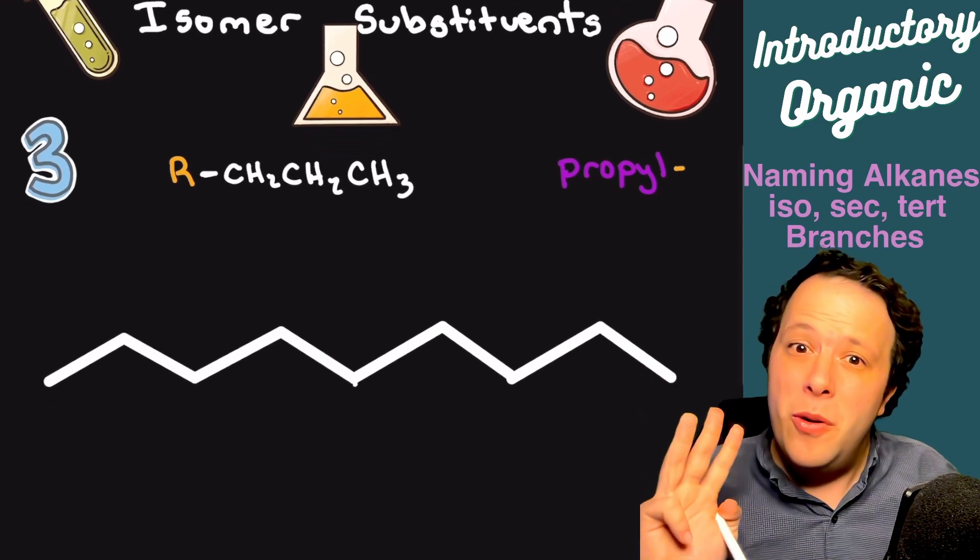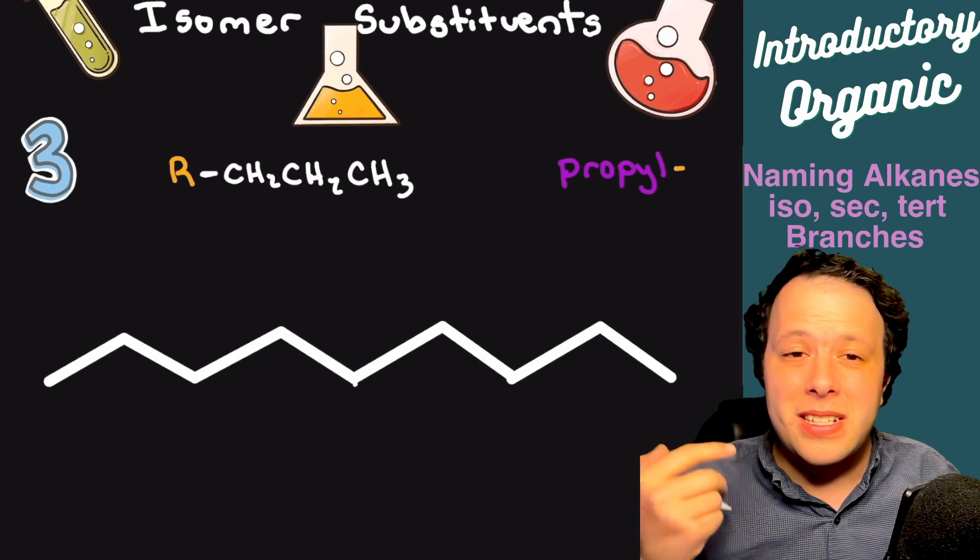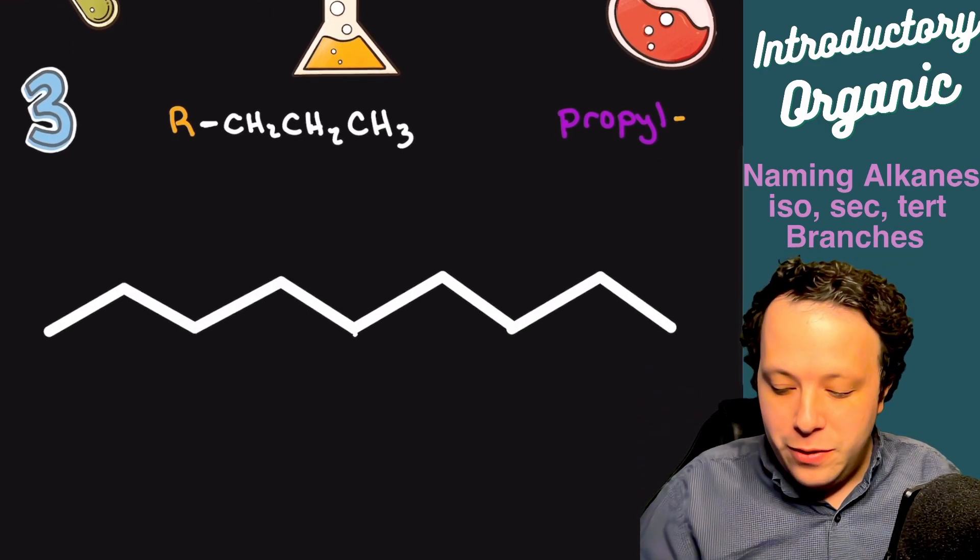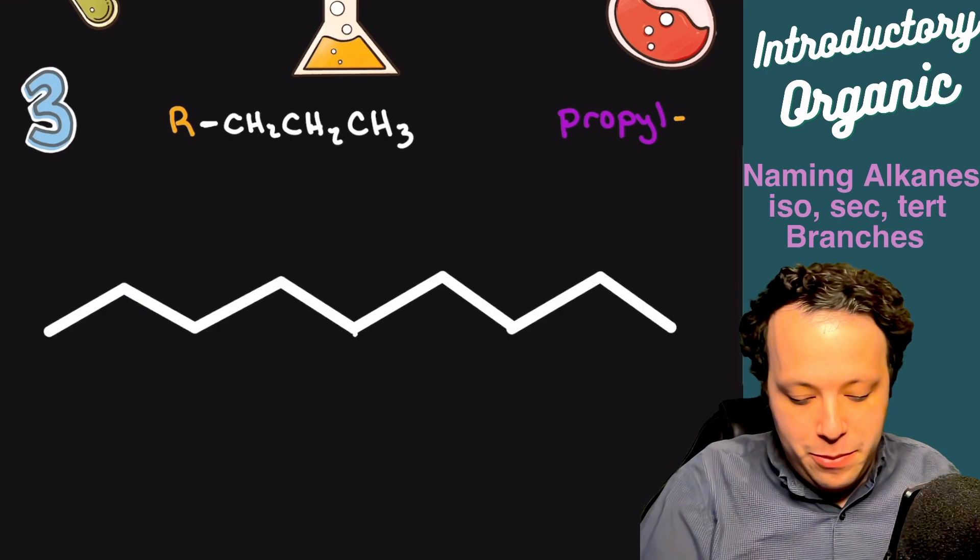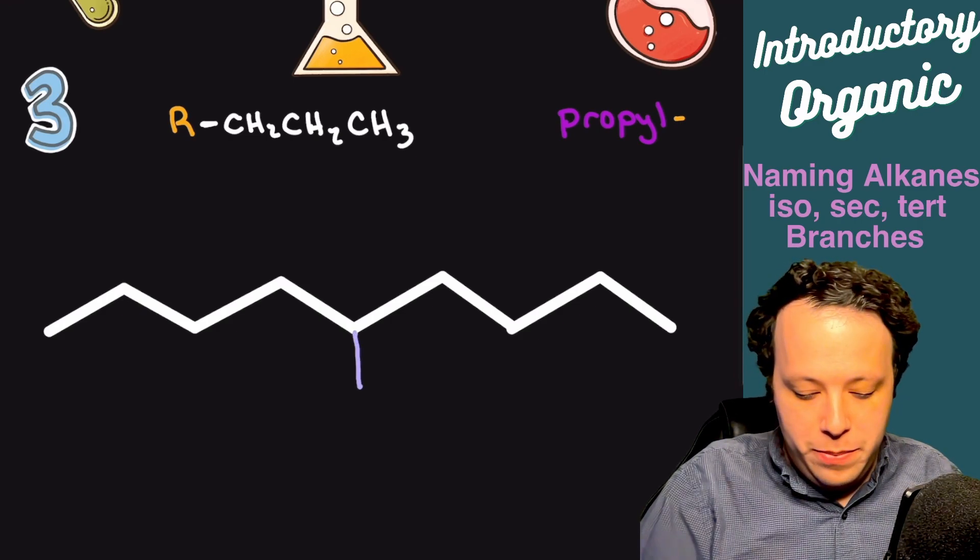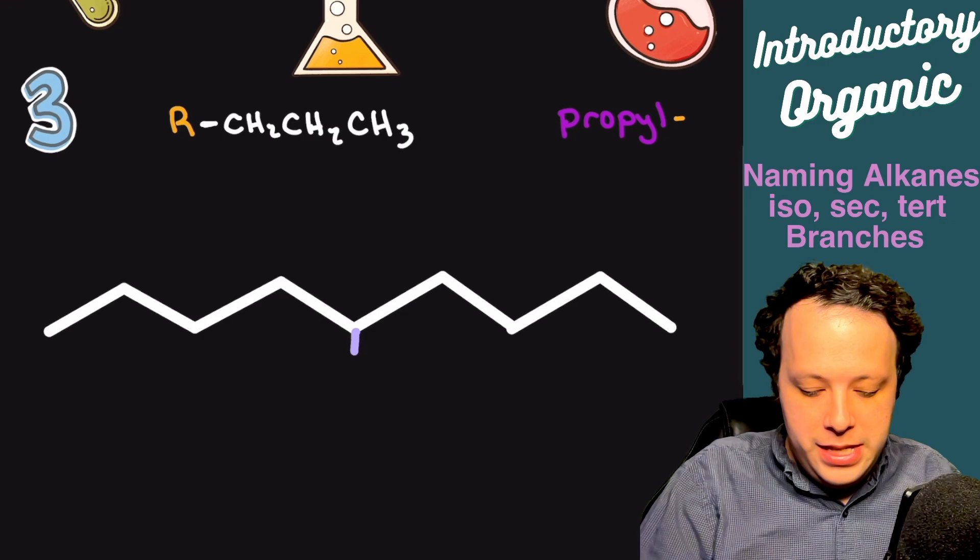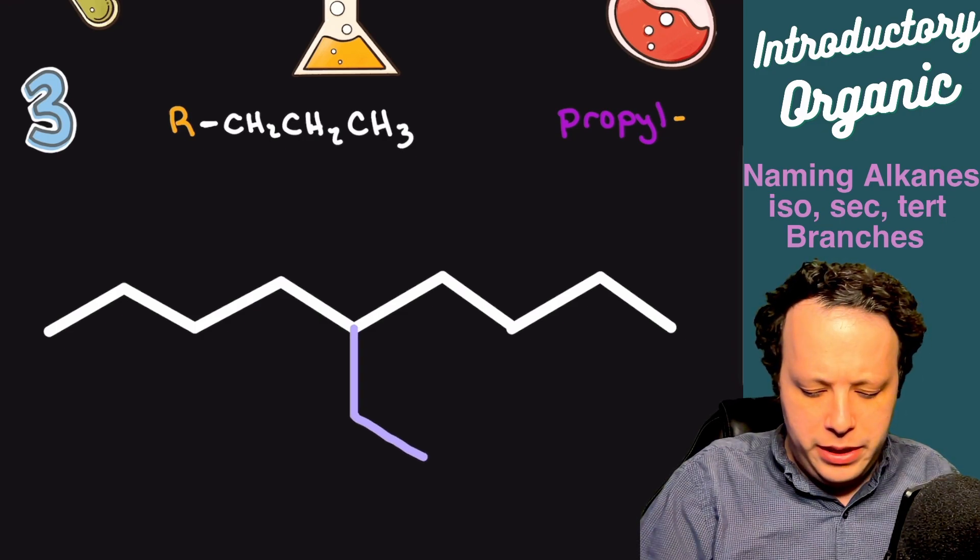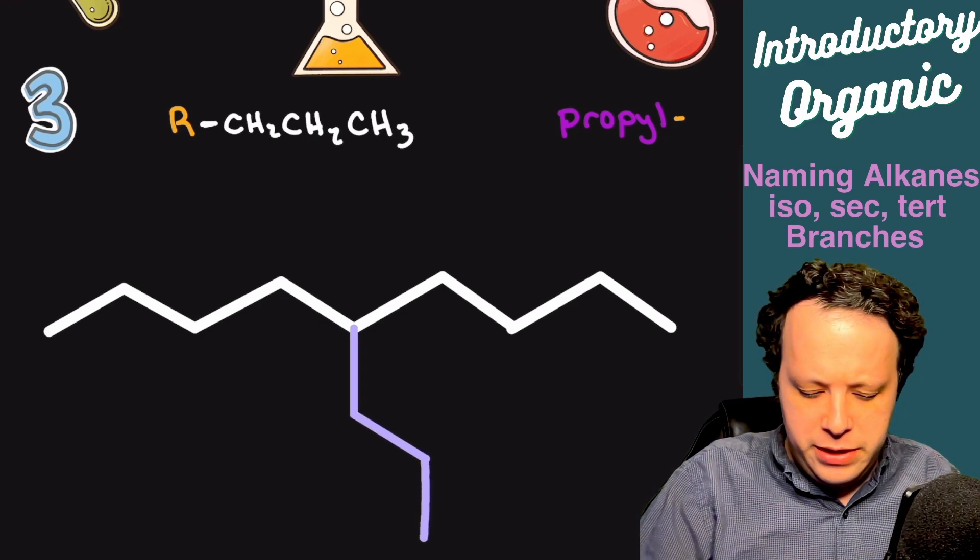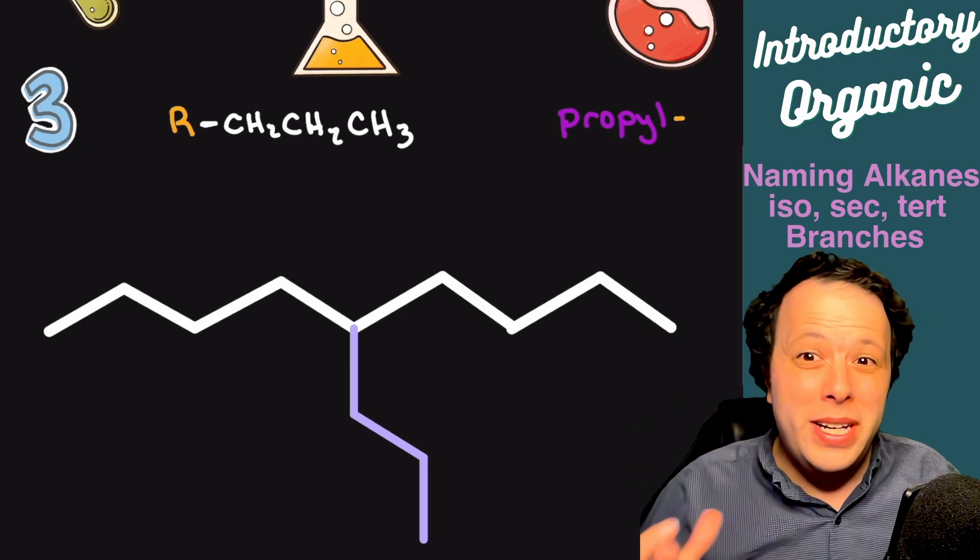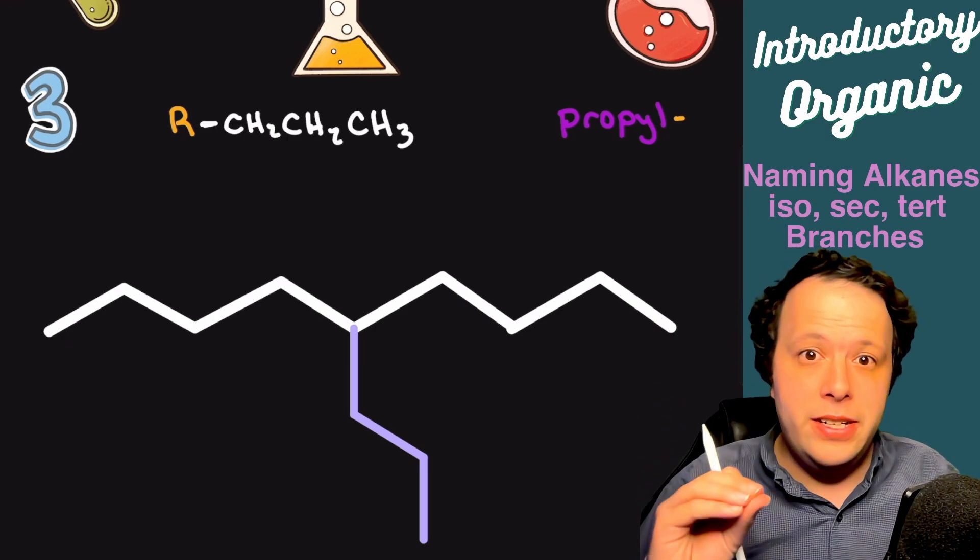Let's focus on propyl. Propyl, if you remember, is three carbons. If I were to add a propyl onto this chain, the big thing is whenever you start adding these bigger chains, there's kind of a limit to where you can realistically place them, because if you place them too close to the ends, it's going to end up redefining your longest parent chain.